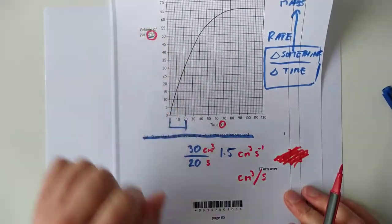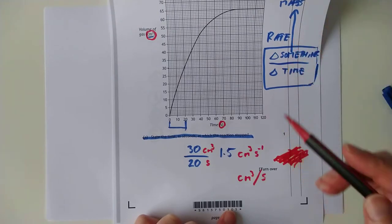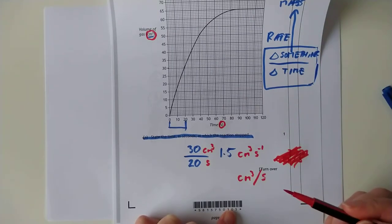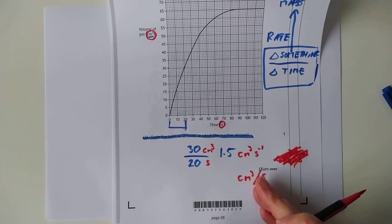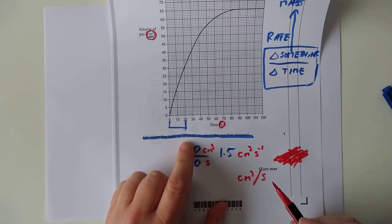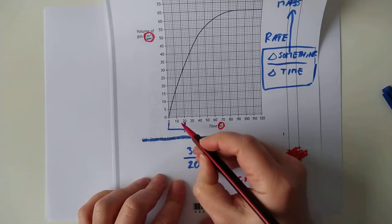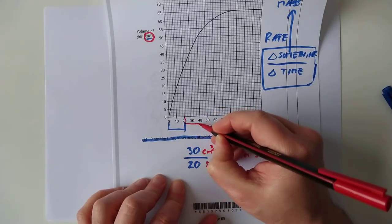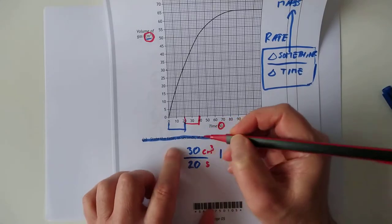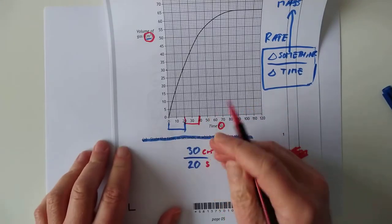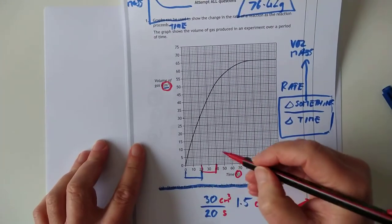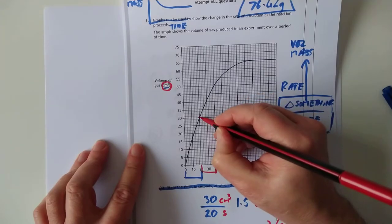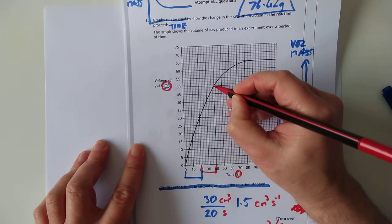Just out of curiosity, what if we calculated the rate in the next 20 seconds? And it's not entirely impossible. I've seen them ask you questions like that. Calculate the rate for the period between 20 to 40 seconds. So that is now our period of time. Still 20 seconds. Let's have a look at the change in volume. So we start here at 20 and we end up here.